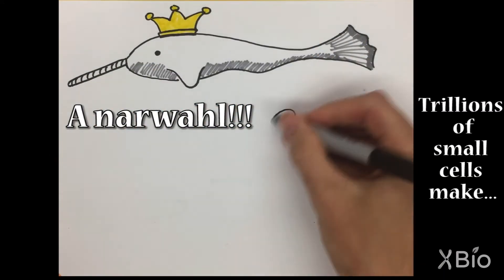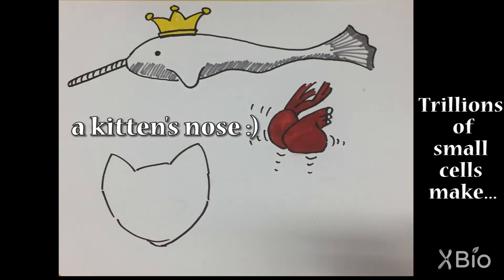Trillions of small cells can make a majestic narwhal, a beating heart, and a kitten's nose.